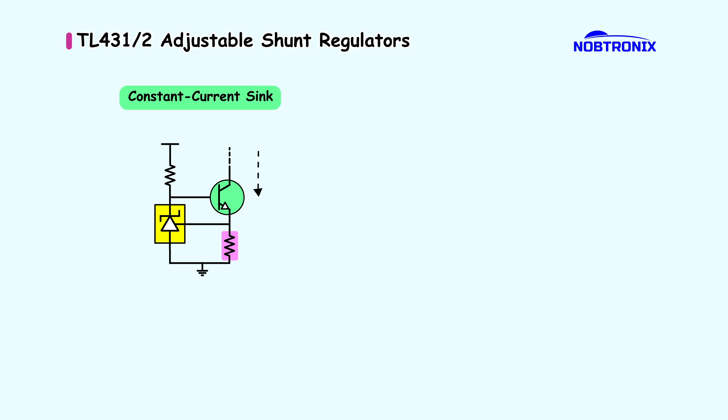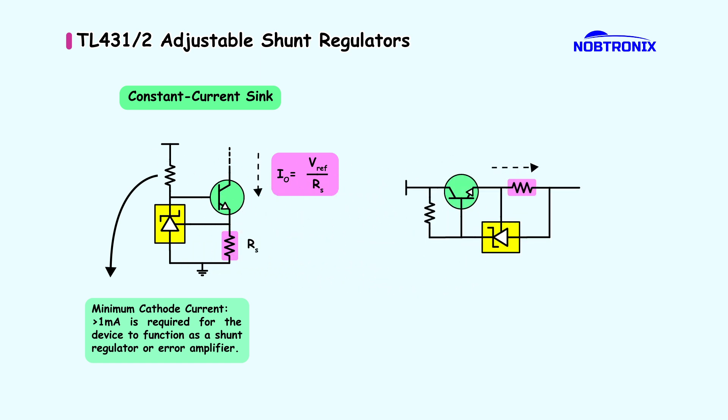Here, the TL431 is used to create a precision constant current sink. Adjust RS to set the current. Ensure a bias current of at least 1 mA for proper operation. With a slight modification, the TL431 can act as a precision current limiter. Adjusting RS controls the maximum current.